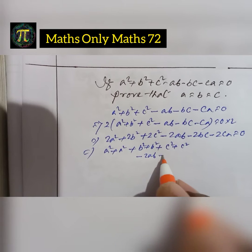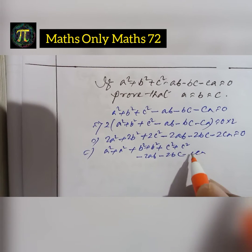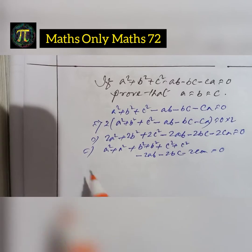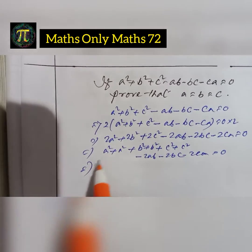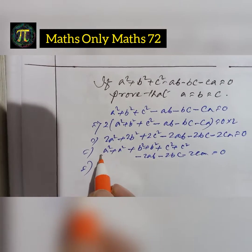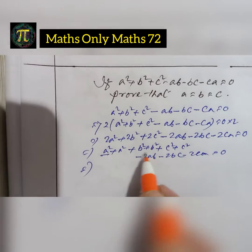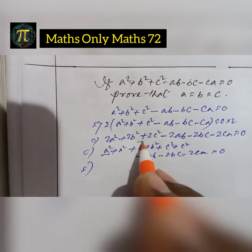Now minus 2ab minus 2bc minus 2ca equals to 0. Now I am making groups: a²-2ab+